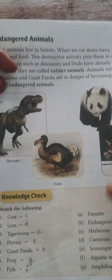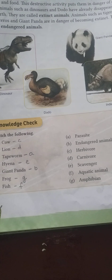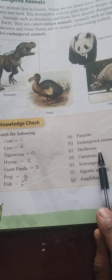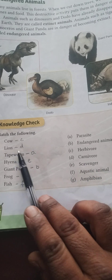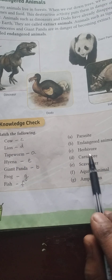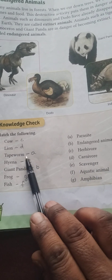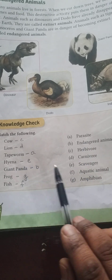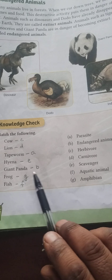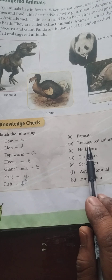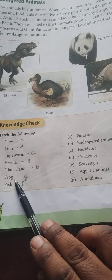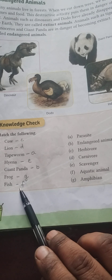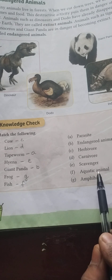Now let's check the match the following. Cow — herbivore. Lion — carnivore. Tapeworm — parasite. Hyena — scavenger. Giant panda — endangered animal. Frog — amphibian. Fish — aquatic animal.